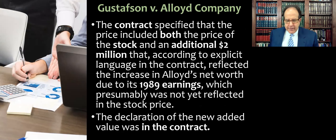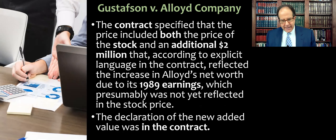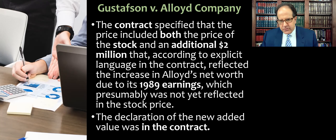The contract specified that the price included both the price of the stock and an additional amount — about $2 million — that reflected the increase in Alloid's net worth due to its 1989 year-to-date earnings, which were presumably not yet reflected in the stock price. The sellers said they'd had a really good year with a lot of revenue come in, but didn't yet have their quarterly or year-end earnings report to prove it.